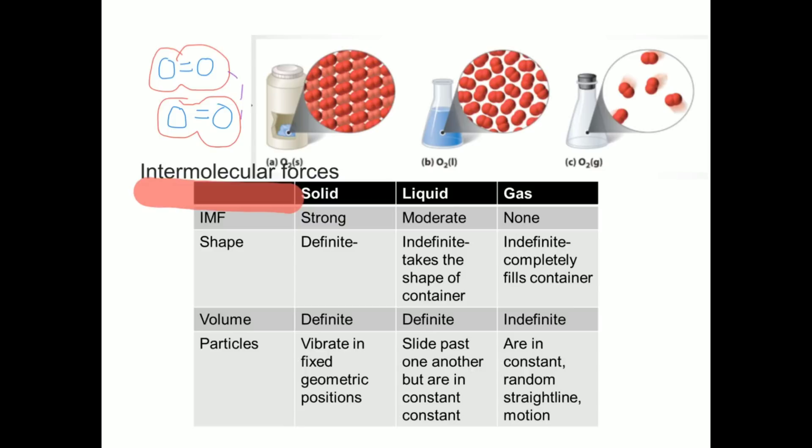Gases are considered to have no intermolecular forces at all, or at least ideal gases. They have an indefinite shape and an indefinite volume. They always completely fill any container they take. It is said that ideal gases, or in a perfect world, gases are in constant, random, straight line motion.